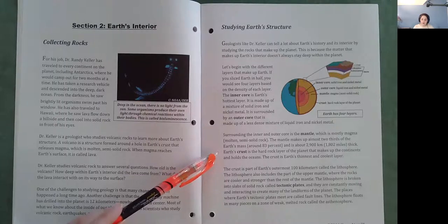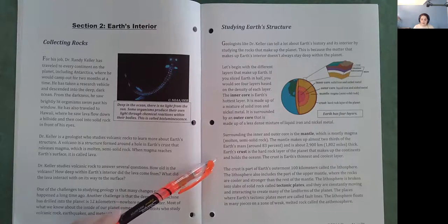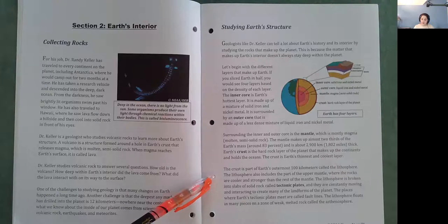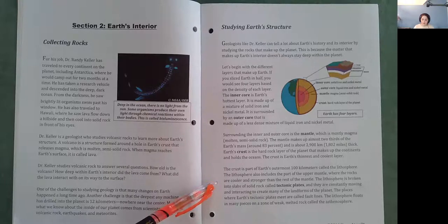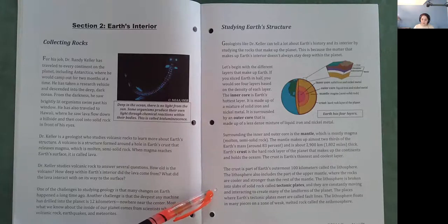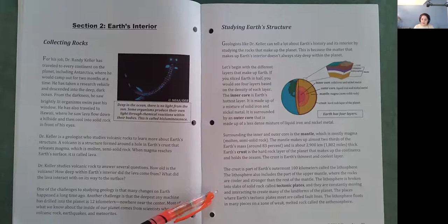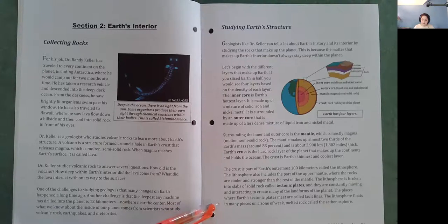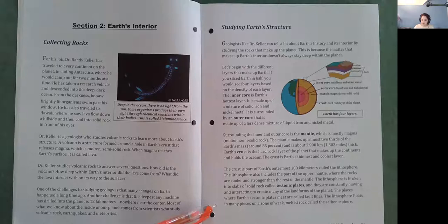Earth's crust is the hard rock layer of the planet that makes up the continents and holds the oceans. The crust is Earth's thinnest and coolest layer. The crust is part of Earth's outermost 100 kilometers called the lithosphere. The lithosphere also includes the part of the upper mantle, where the rocks are cooler and stronger than the rest of the mantle. The lithosphere is broken into slabs of solid rock called tectonic plates, and they are constantly moving and interacting to create many of the landforms of the planet.